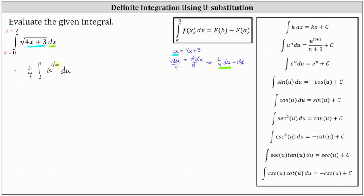And if we want to leave this in terms of u, we need to find the limits of integration for u. So notice when x is equal to zero, u is equal to four times zero plus three. The lower limit of integration for u is three. And when x is equal to two, u is equal to four times two plus three, which is 11. The upper limit of integration for u is 11.